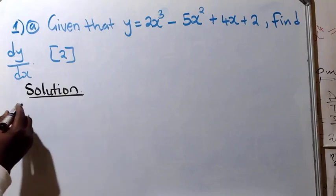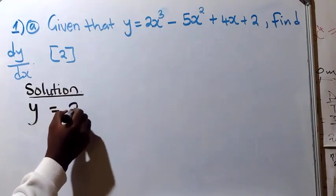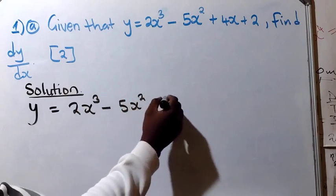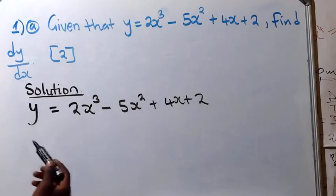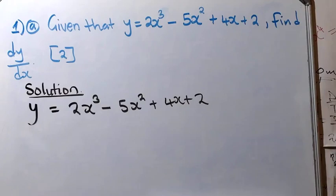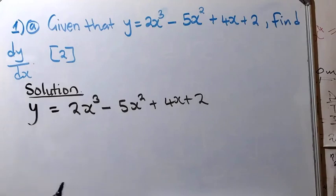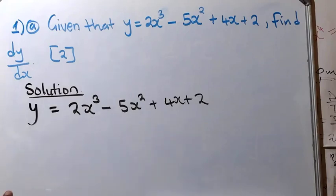So the first thing, you're going to write the equation — the function that you're given, which is y = 2x³ - 5x² + 4x + 2. If you want to find dy/dx, you want to differentiate this function with respect to x. There are many methods you can use: the quotient rule, the product rule, first principle, or the formula. Looking at this function, you can normally use the formula method.